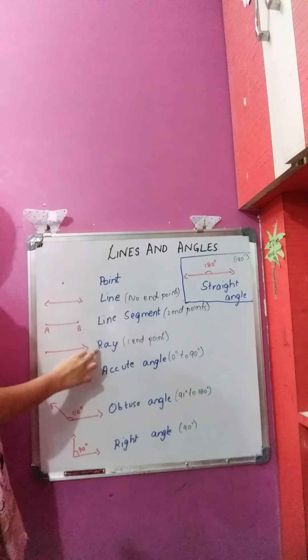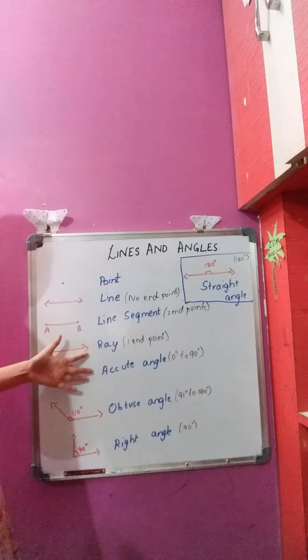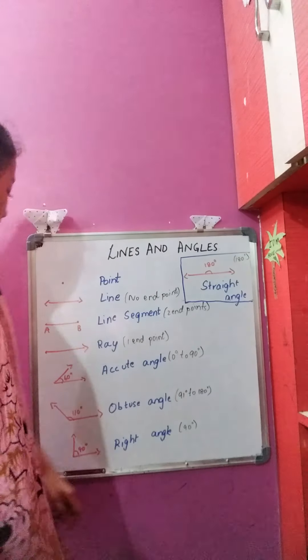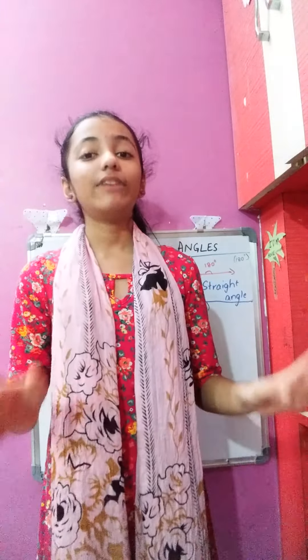Coming to ray. This is a ray, and a ray has one end point. So a ray can be extended only in one direction. Let me repeat: a line can be extended in both directions, whereas a line segment cannot be extended in either direction, and a ray can be extended only in one direction.